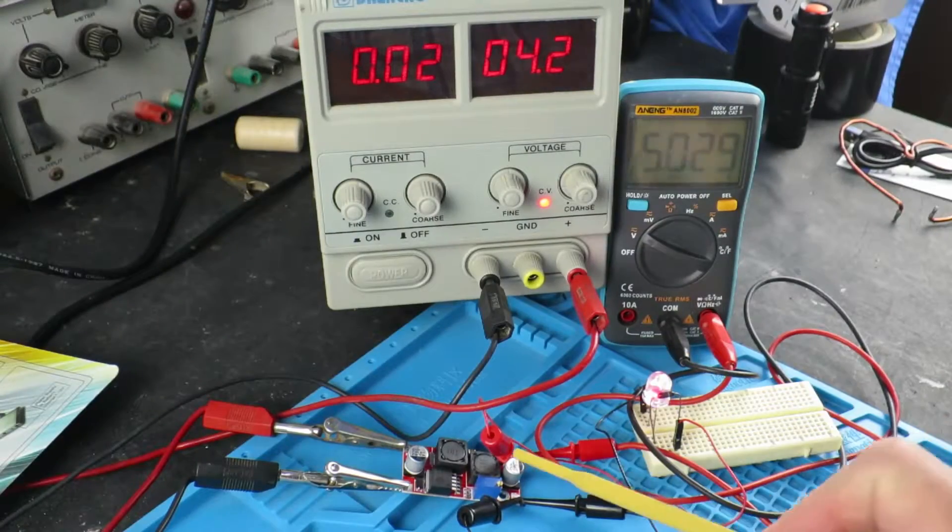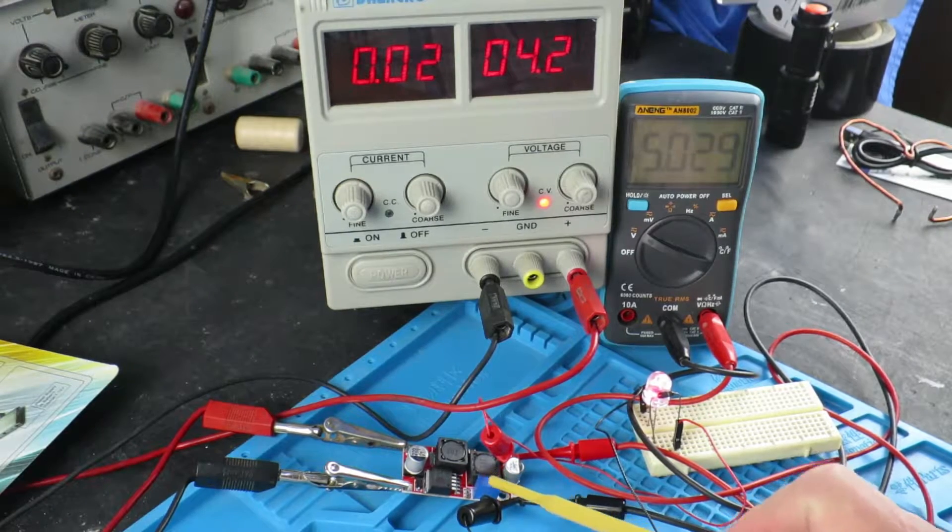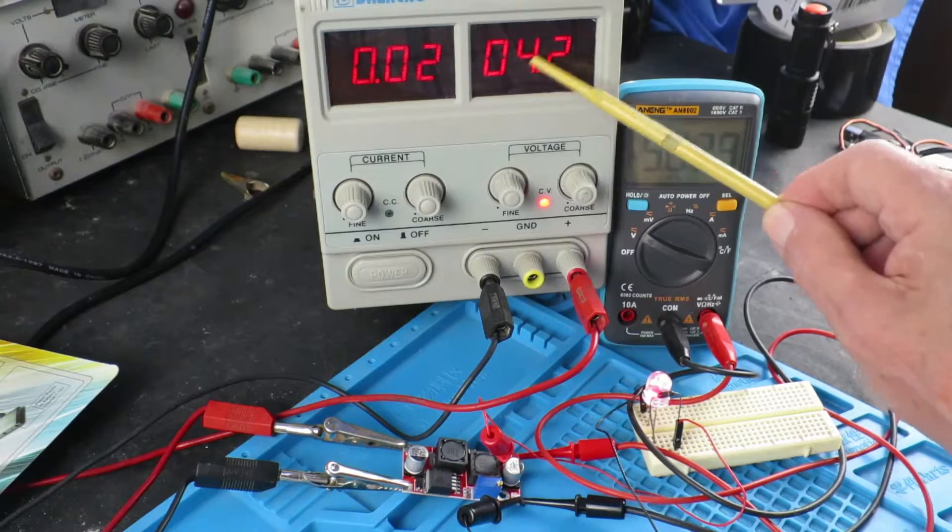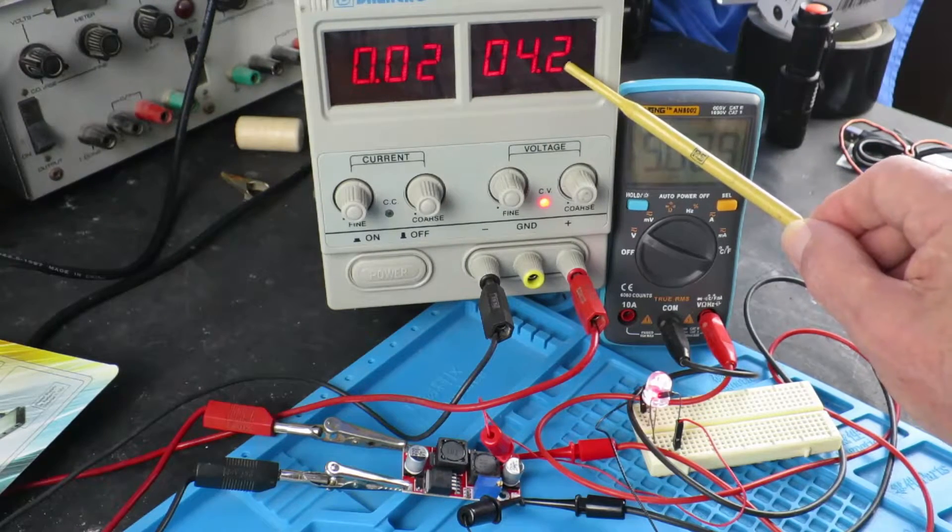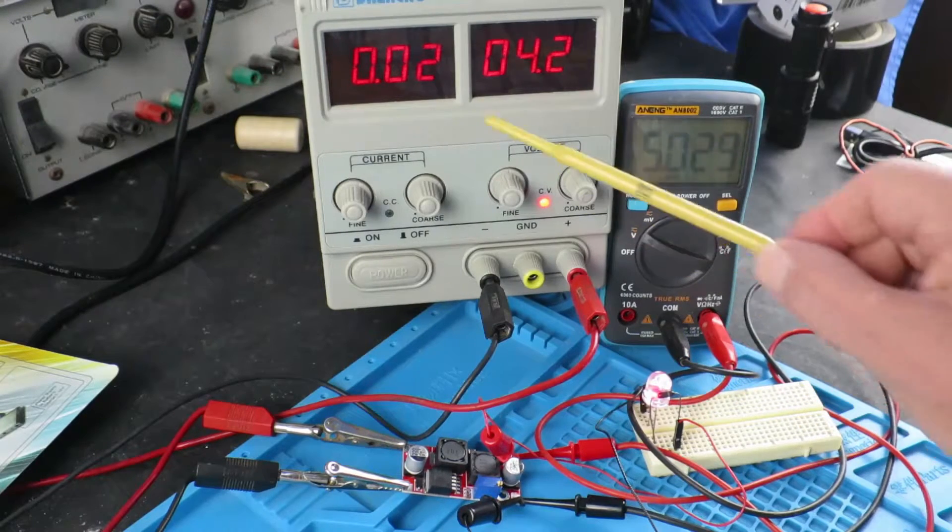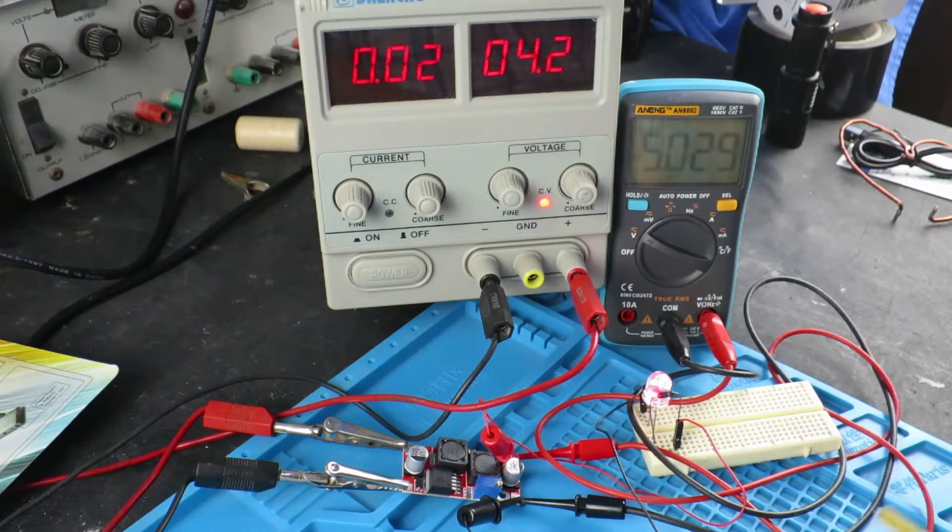As before I've set the output voltage to 5 volts which we can see on the meter here. As an example source voltage 4.2, a lithium ion cell for example, and it's just powering this little LED at around 20 milliamps. So that's all well and good.